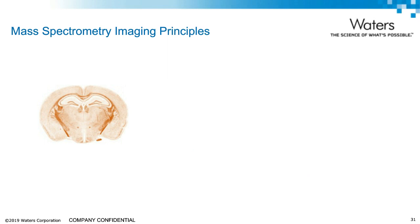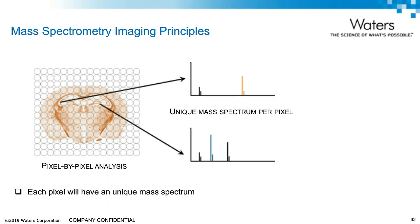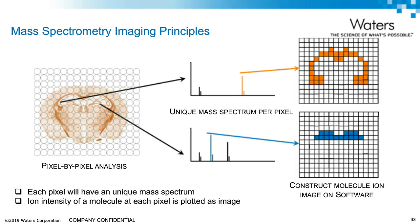Let's talk about the mass spec imaging principle, which is applicable to basically any mass spec imaging technique. First, we get a thin section of tissue. Using a very localized ion source, we take pixel-by-pixel or spot-by-spot mass spectra of that tissue. Each pixel will have its own unique mass spectrum. We can then take the intensity of a particular ion and plot its intensity at each pixel, creating an ion intensity heat map over the XY plane. We call this ion intensity heat map a mass spec image. We can select a different ion and get a different intensity heat map or a different mass spec image.